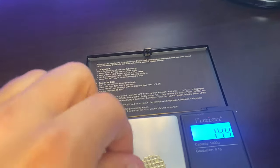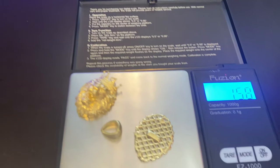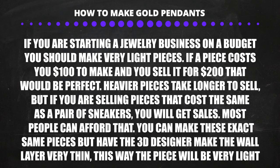The total is 15.8 grams. Pendants like these are perfect to make when you're starting out, but you want to tell the 3D designer to make the wall much thinner. When you're starting out you might only have $1,000 — the resin is going to cost around $100, so you'll have $700 left over. You want to make light pieces; you want a piece like this to weigh under 5 grams.